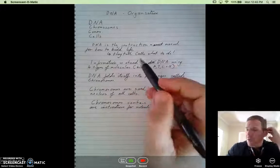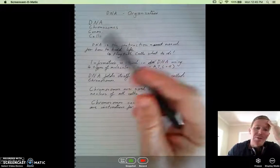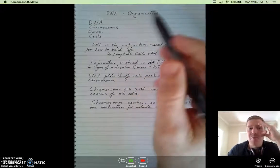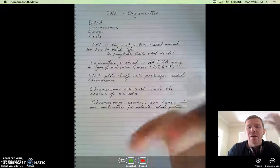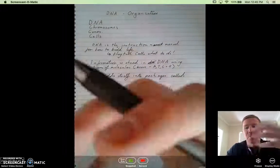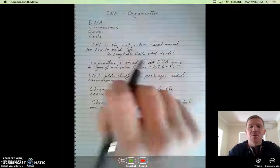So basically what you would have seen then is a brief explanation of that. But in summary, DNA is the instruction manual for how we build life. They tell cells what to do, what the type of cells they need to develop into, all those types of things.